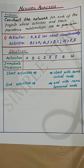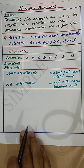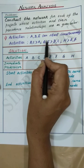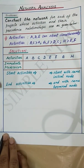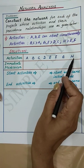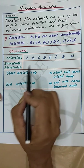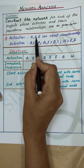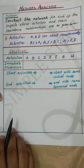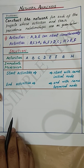Network analysis problems: construct the network for each of the projects whose activities and predecessor relationships are given. For the first problem, let us write the given predecessor relationships in tabular form. We are given activities from A to H. Activities A, D, and E can start simultaneously — that is, these activities do not have predecessors.